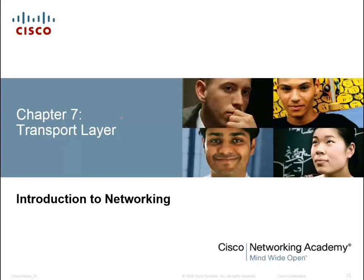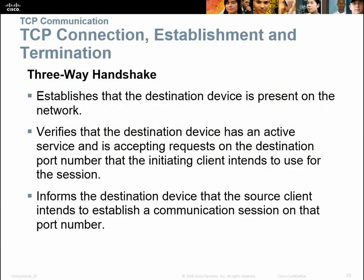This is part two of chapter seven, transport layer, part two. What we're going to talk about in this section is TCP communication. We have TCP connection establishment and termination. When TCP has to make a connection, because it's a connection-oriented protocol, it does what we call a three-way handshake.